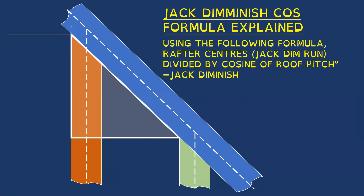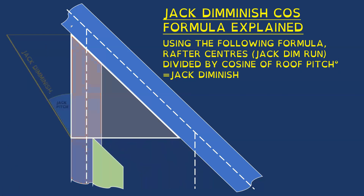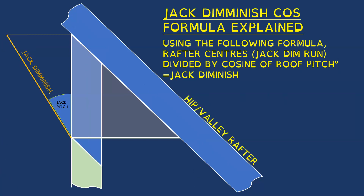If we apply the formula — rafter centers divided by cosine of roof pitch — this gives us the jack diminish, as you can see animated here. I've opened out that right angle triangle: we already had the jack diminish run, and when we divide that by the cosine of the roof pitch or jack pitch, that gives us this hypotenuse distance. Once you have the shortest jack marked, each consecutive jack will be longer by that distance — the jack diminish — all the way up through the roof.